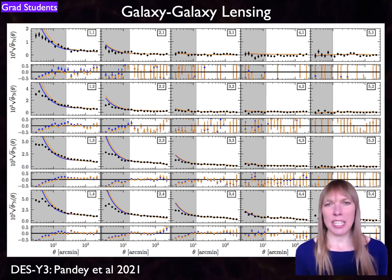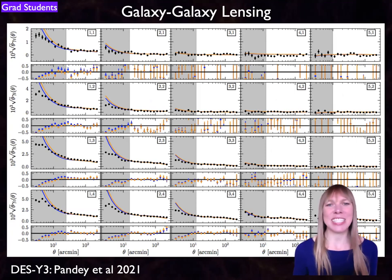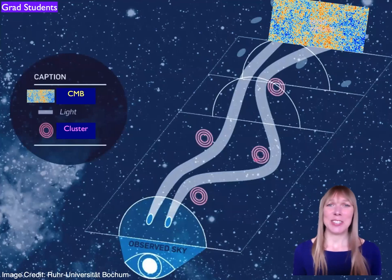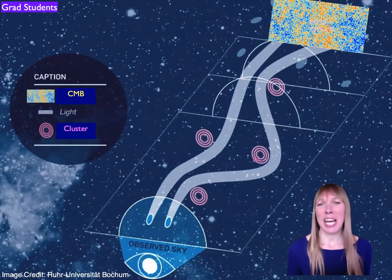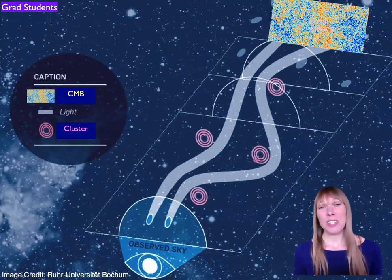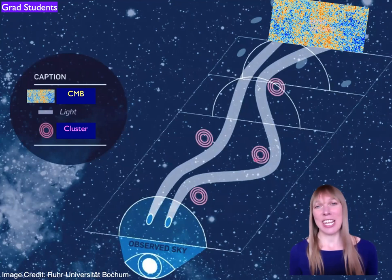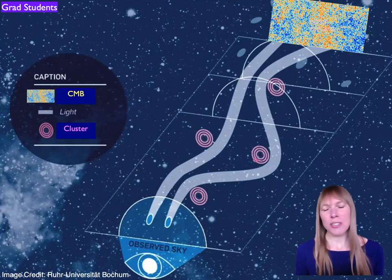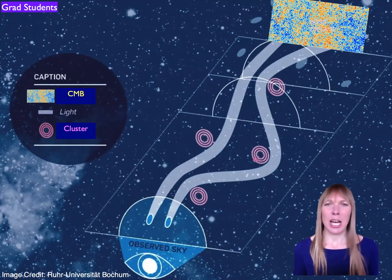Here's a new result from DES Year 3 showing their galaxy-galaxy lensing — one of their 3x2pt statistics — with different combinations of foreground lens galaxies and background source galaxies, representing huge amounts of data to compare with theory. There's more: the Cosmic Microwave Background itself is also lensed by foreground structure in exactly the same way as our galaxies — those hot and cold spots are also lensed. That's called CMB lensing and gives even more information. You can also identify and count galaxy clusters within the large-scale structure — an incredibly powerful probe as well.